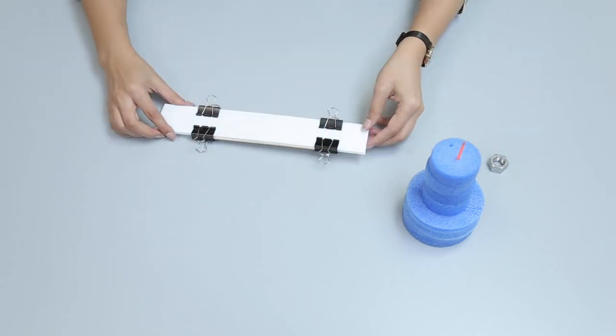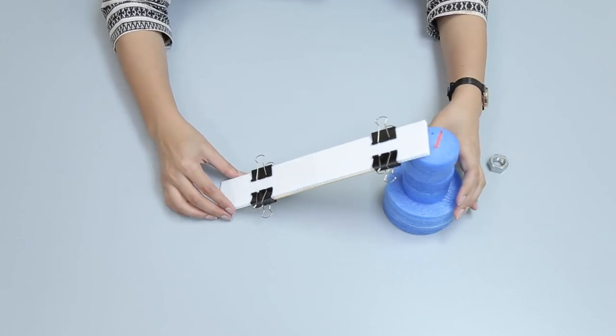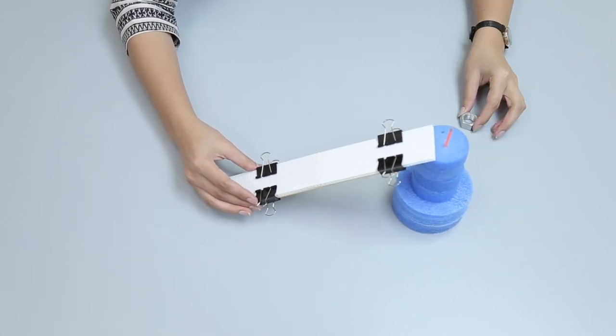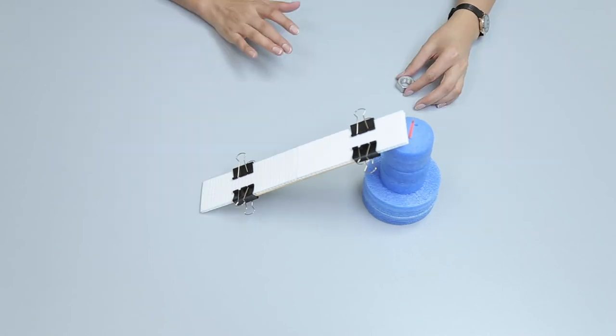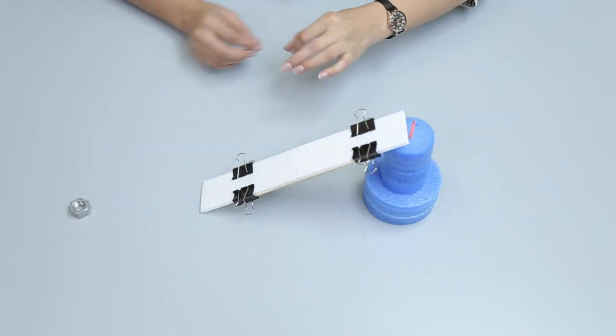Now place the ramp on top of the tower so that one end rests on the top of the tower and the other on the ground. Your ramp is ready to roll the metal nut up the inclined plane.